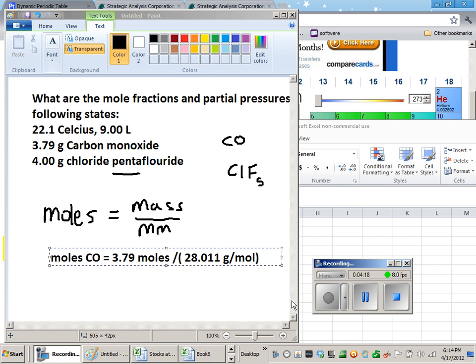So here I am calculating moles of carbon monoxide by dividing the mass, 3.79... oh, serious brain fart, sorry about that. It's in grams, right? So it's 3.79 grams, it's mass, so it's in grams or some kind of mass unit, not moles, divided by 28.011 grams per mole.